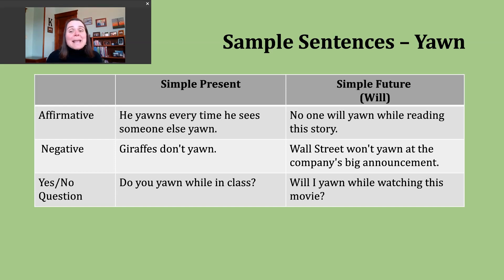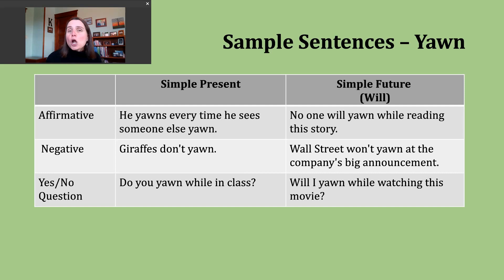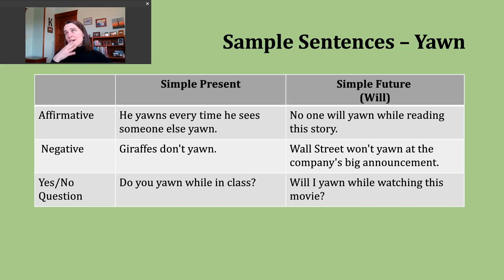Now let's talk about making a negative sentence in the simple future. We start with our subject, use 'will not,' and then the base verb. Sometimes what can be confusing about the negative is the contraction form of 'will not' — that's 'won't,' W-O-N apostrophe T, said with a long O sound. Example sentence: 'Wall Street won't yawn at the company's big announcement' — suggesting they're going to pay attention. This isn't going to be something boring; they're going to be interested.